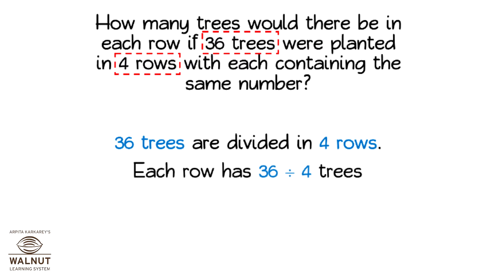Each row has 36 divided by four trees. So 36 divided by four is nine. That means each row has nine trees.